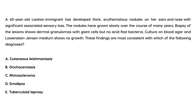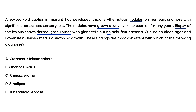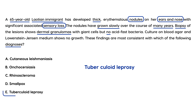Vignette 1: A 65-year-old Laotian immigrant has developed thick erythematous nodules on her ears and nose with significant associated sensory loss, grown slowly over many years. Biopsy shows dermal granulomas with giant cells but no acid-fast bacteria. The absence of acid-fast bacteria is consistent with tuberculoid leprosy, and the nodule placement on ears and nose along with peripheral nerve involvement confirm this diagnosis.